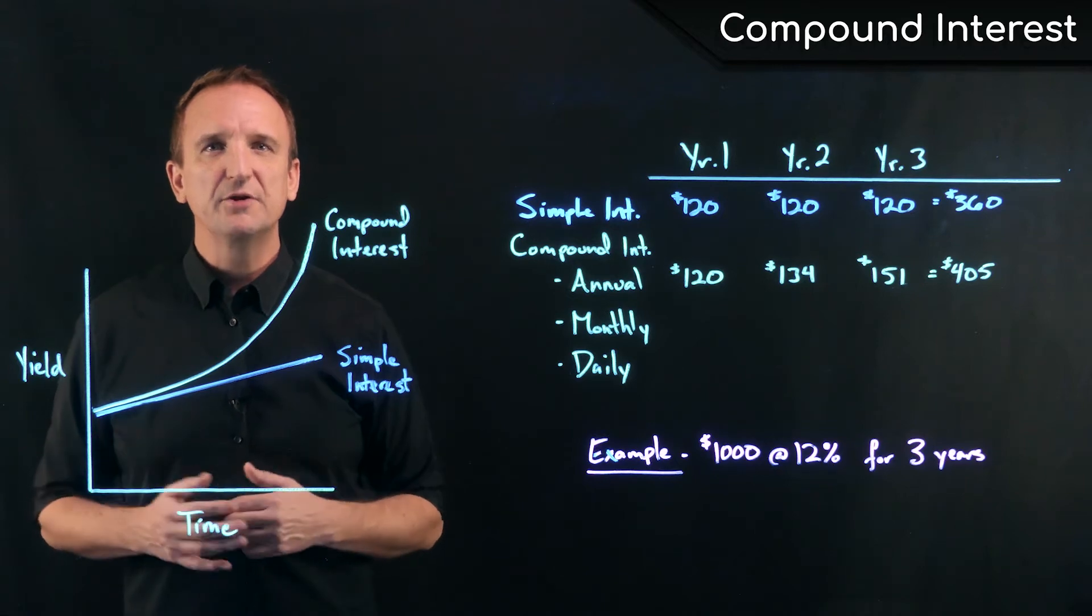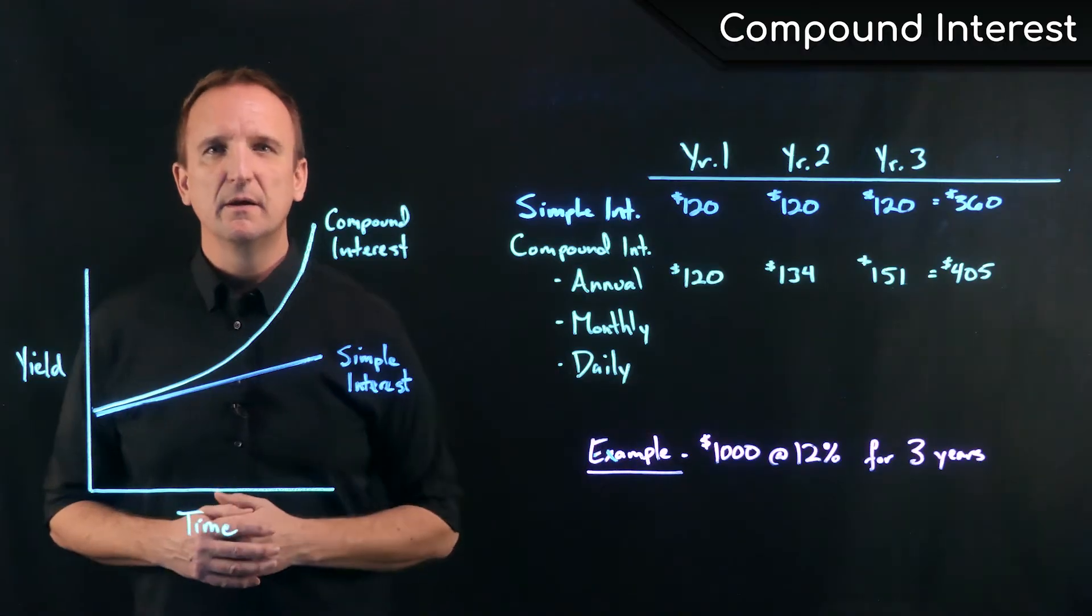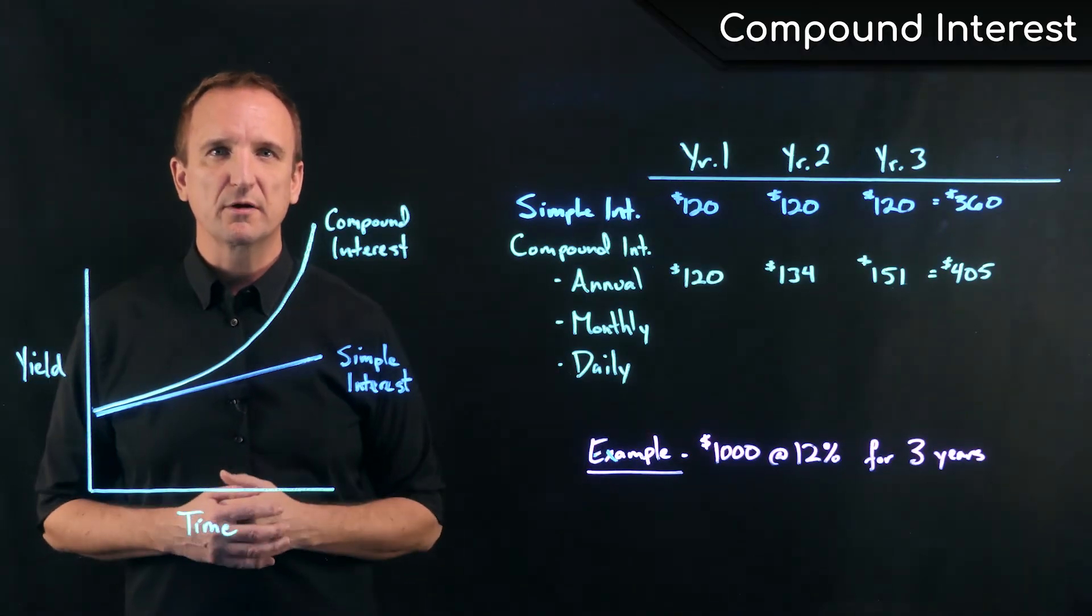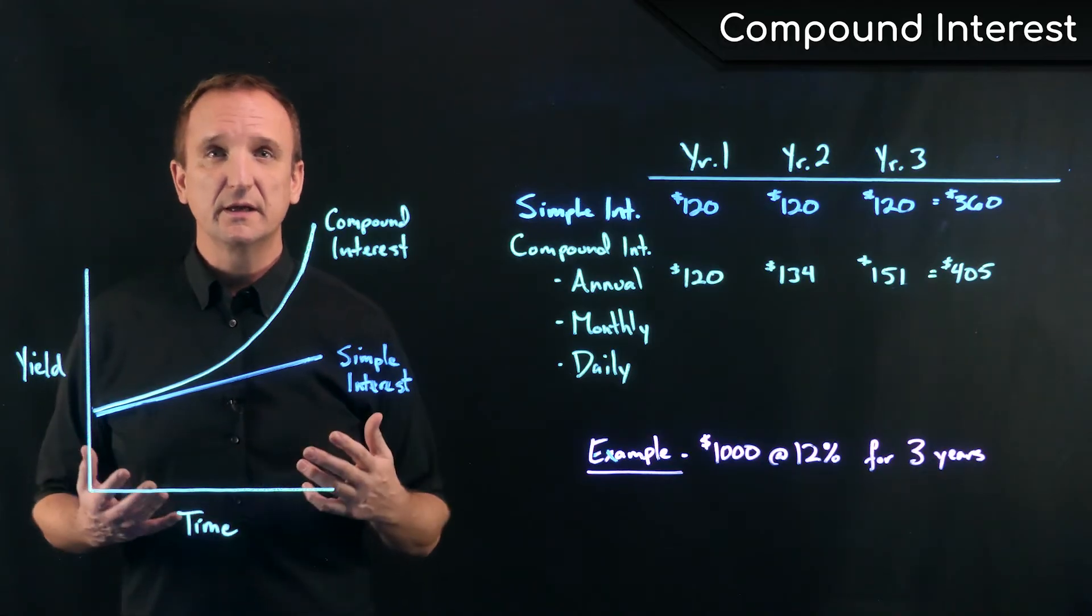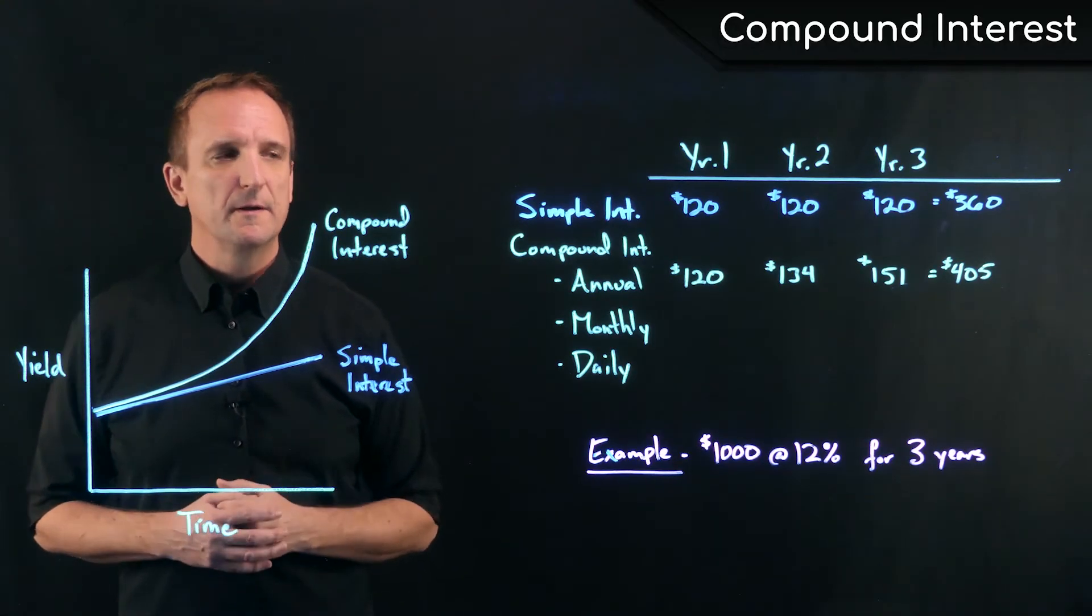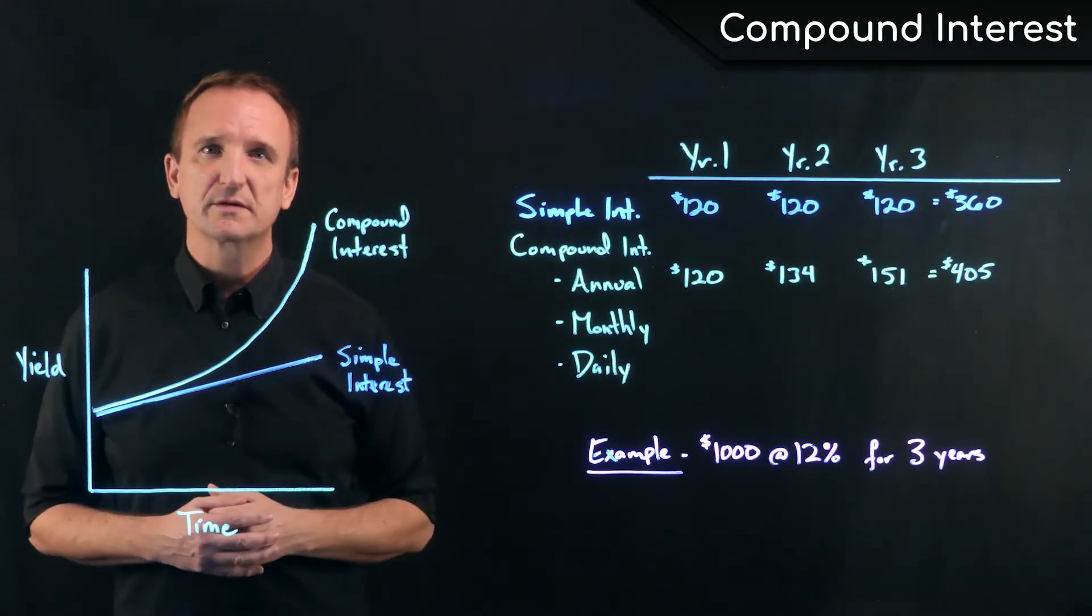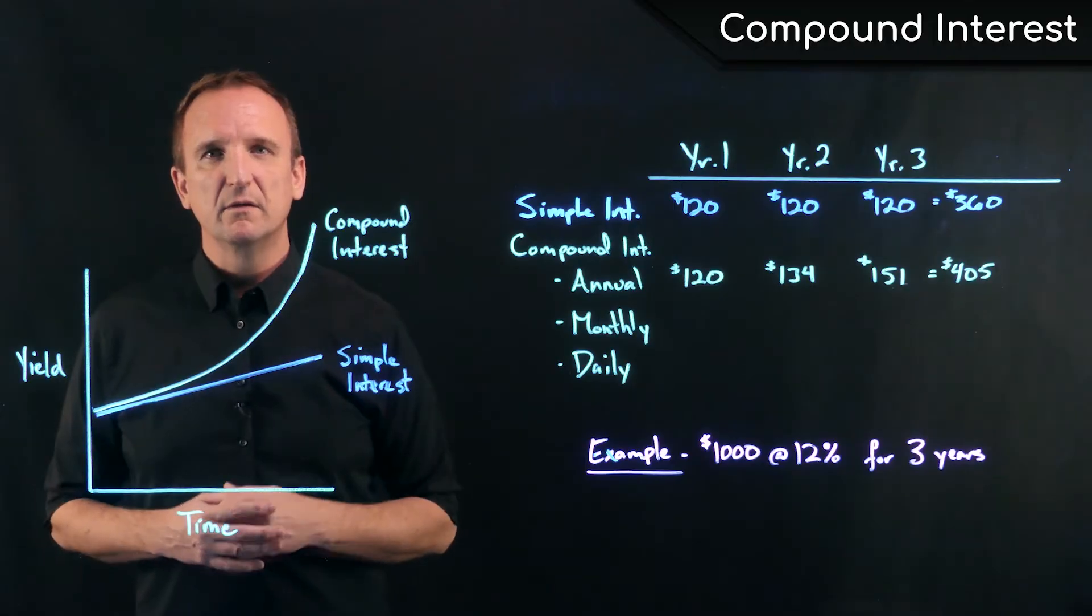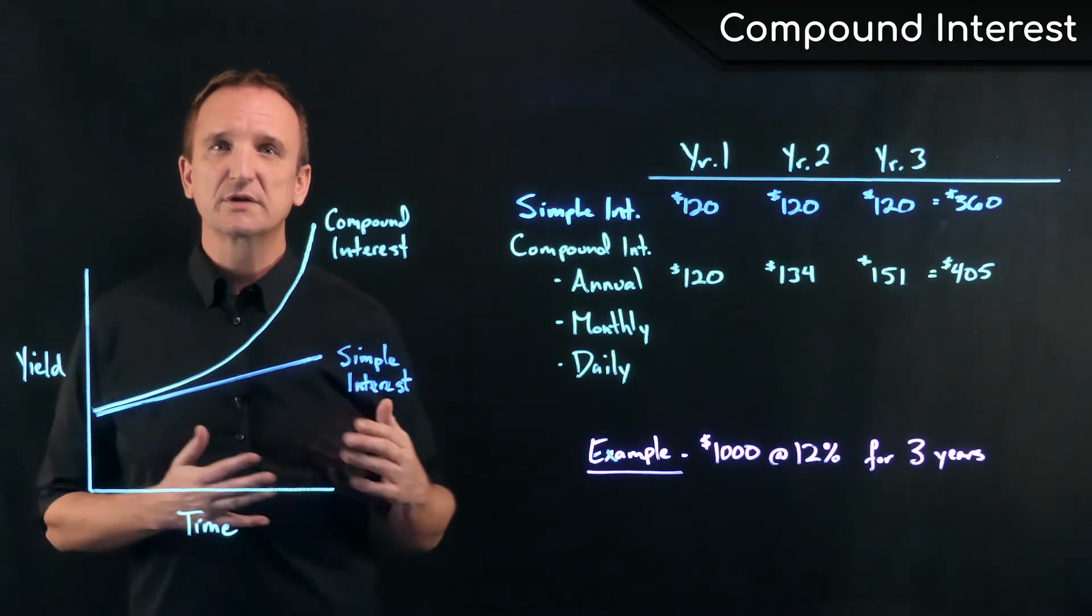In the case of annual compounding, it means we get one interest payment per year - the entire 12% is paid out once per year. In the case of monthly compounding, as is in the case with almost all real estate finance and investments, that 12% is divided up into 12 months. So a 12% nominal return, which is the named rate, would be paid at 1% per month.